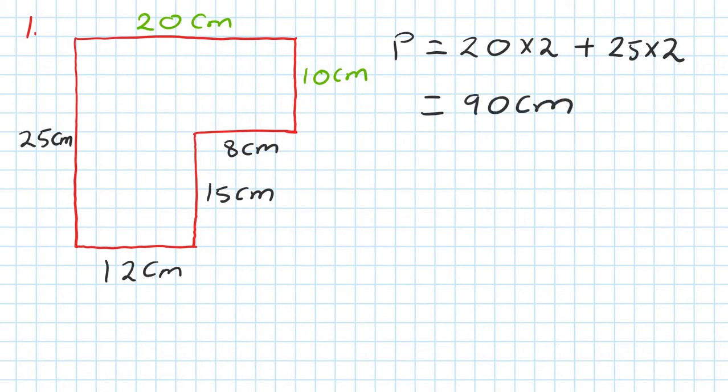Another way is you just go 25 plus 20 plus 10 plus 8 plus 15 plus 12 - write it out and work it out. You get the same answer. So this is just another way of finding the perimeter.